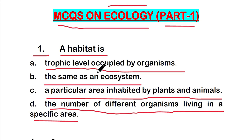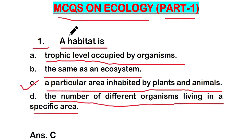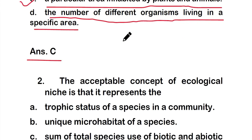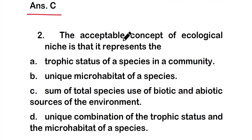The right answer is option C — a particular area inhabited by plants and animals is known as a habitat. Now moving on to question number two.